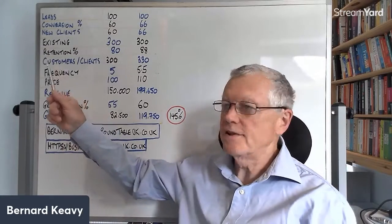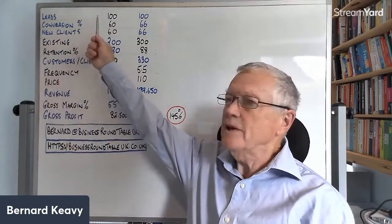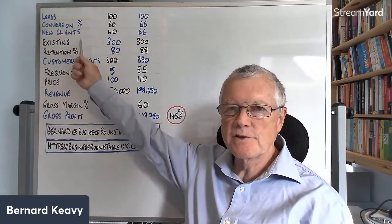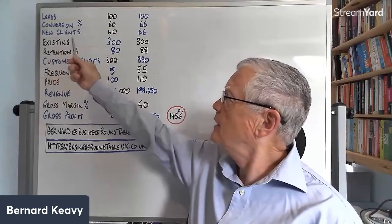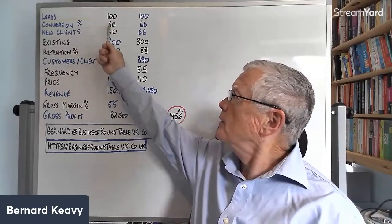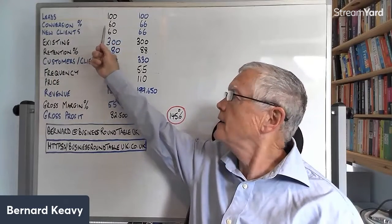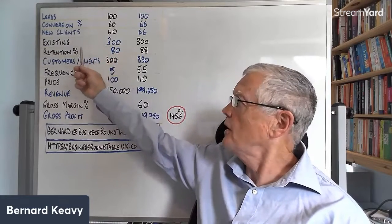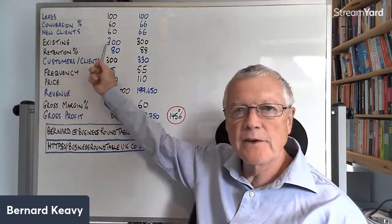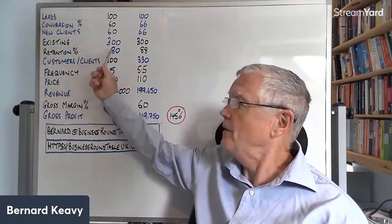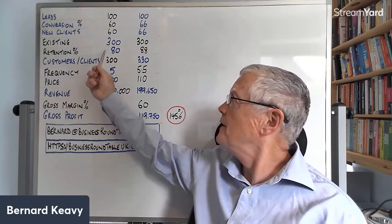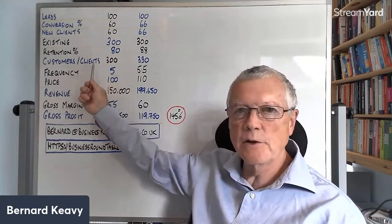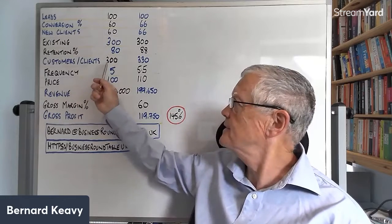Hello. Here we have a small business. We know how many leads we generate and we know how many existing customers or clients we've got from the previous year. So if we generated 100 leads and had a 60% conversion rate, we'd end up with 60 new customers or clients. And if we had 300 from last year and we had an 80% retention rate, that would be 240. Add the two together and our total number of customers or clients is 300.